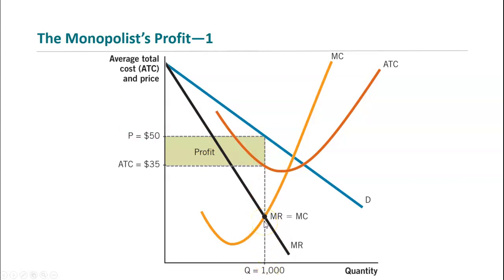The key choice is what quantity you will produce. Choose your quantity where marginal revenue equals marginal cost. Then draw a dotted line up: where it hits the demand curve gives you your price, where it hits the average total cost curve gives you your cost per item, and the difference is your profit per unit. Find the area of that rectangle and it gives you total profit.